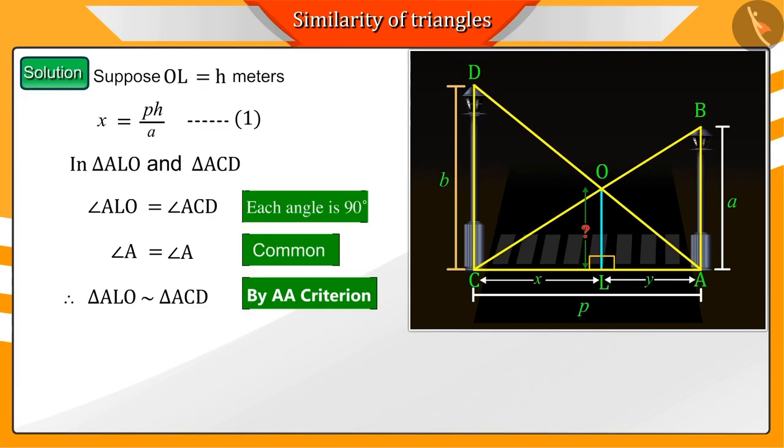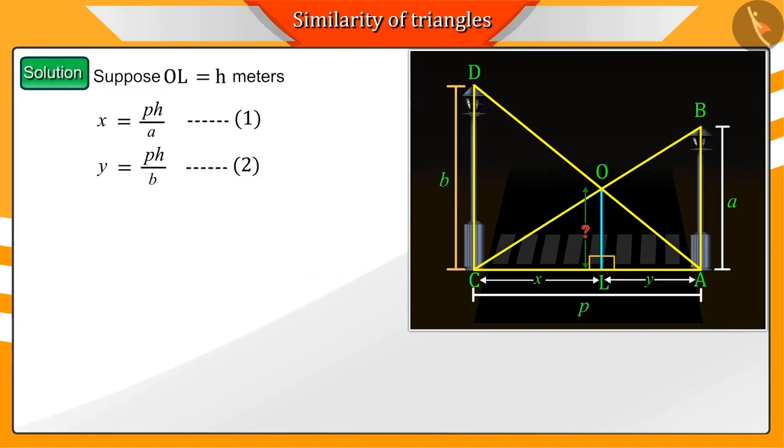Therefore we can say that the sides AL and AC and OL and DC are proportional to each other. Substituting all the known values and solving them we get equation two. Adding the equations one and two and solving it further.